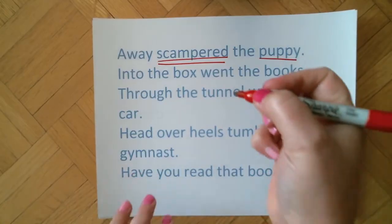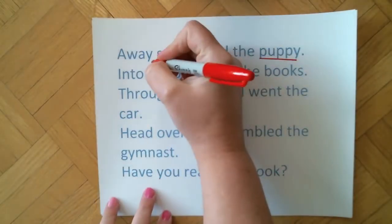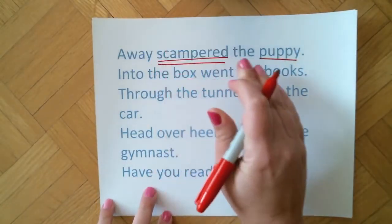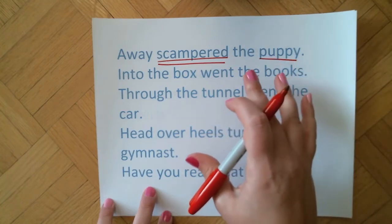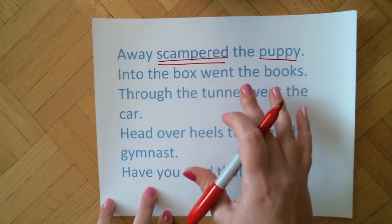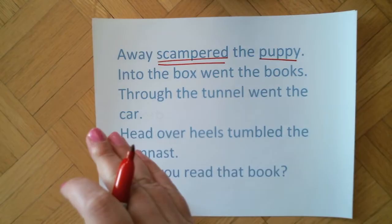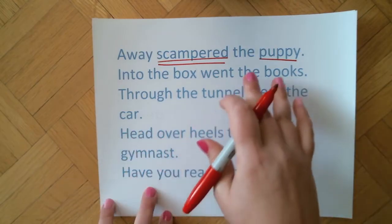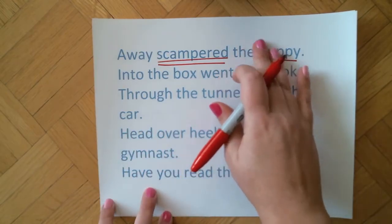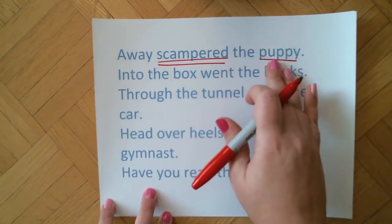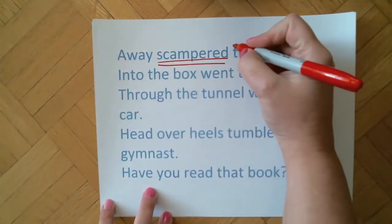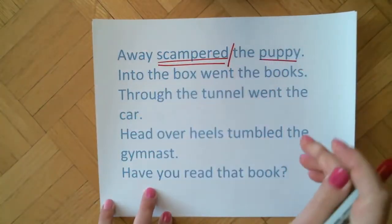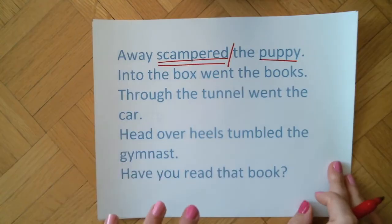Since the subject comes after the verb, I can't put my dividing line in front of the verb. I need to decide what is the complete subject and complete predicate. Here, 'the puppy' is the complete subject — all the words of who or what — and 'scampered away' would be all the words of the predicate.